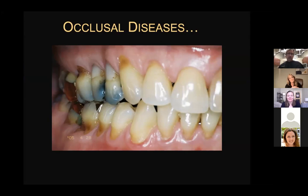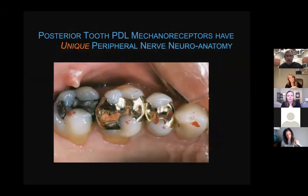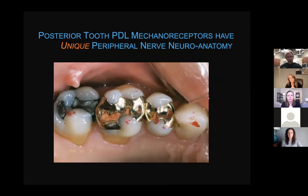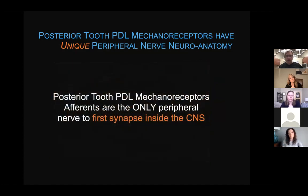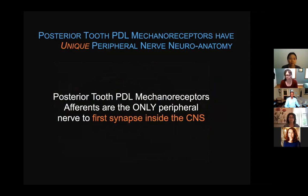There are clinical signs of occlusal problems — teeth chipping away at the gum line, which is not just from a toothbrush as some professionals like to tell patients. The posterior teeth have a specific mechanoreceptor unique in the neuroanatomy, and the posterior tooth periodontal ligament has its afferent — incoming sensory — pathway with the first synapse inside the CNS.